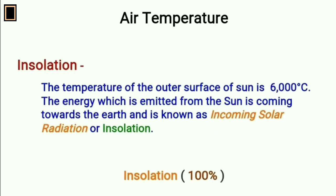Air temperature. Insolation. The temperature of the outer surface of sun is 6000 degrees centigrade. The energy which is emitted from the sun is coming towards the earth and is known as incoming solar radiation or insolation.